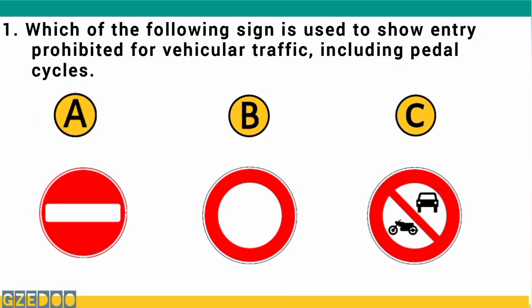Which of the following signs shows entry prohibited for vehicular traffic including pedal cycles? The correct answer is A: entry prohibited for vehicular traffic including pedal cycles.